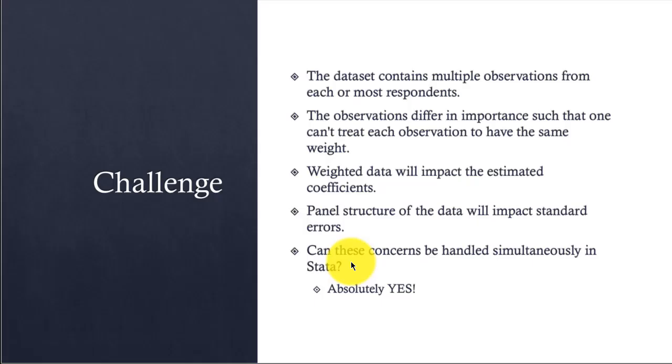The challenge is the following: We have a dataset with multiple observations from most or all respondents, so we may collect more than one observation from each person. At the same time, each observation does not carry the same influence, so they have to be weighted to account for the difference in influence that each observation bears.